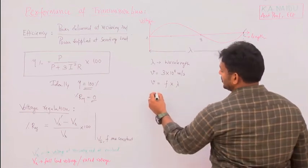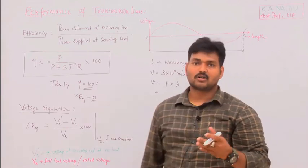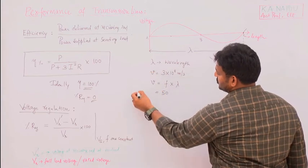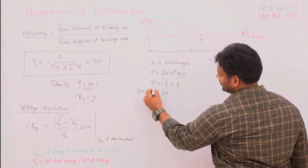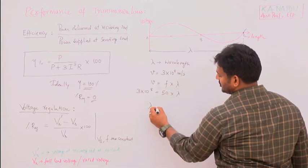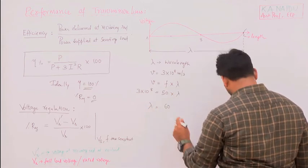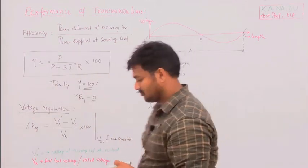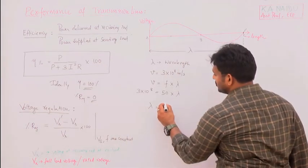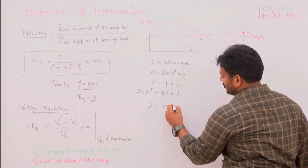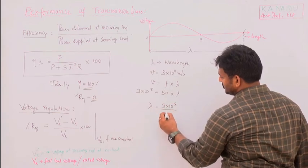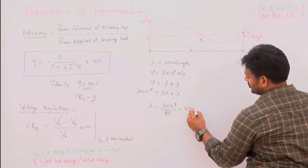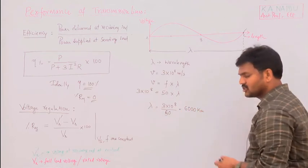In India, we have a constant frequency of 50 Hz. Substituting: 3×10⁸ = 50 × λ, therefore λ = 3×10⁸ / 50 = 6×10⁶ meters, which equals 600 kilometers. So the wavelength of the travelling wave on a transmission line at 50 Hz is 600 kilometers.